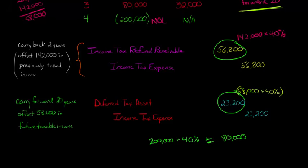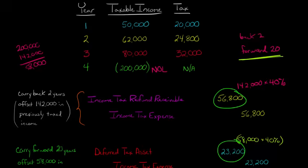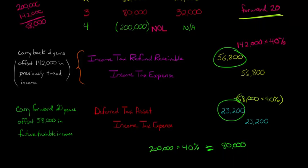Now you might be wondering, hypothetically, let's say the firm had said we don't want to carry it back two years. We want to carry the full $200,000 forward the 20 years. We don't want a refund. Can we just carry the full $200,000 forward? And in that case, yes, you can do that. The firm can elect to carry it all forward and say we don't want the refund from before. Then you would have the deferred tax asset for the full amount of $80,000.